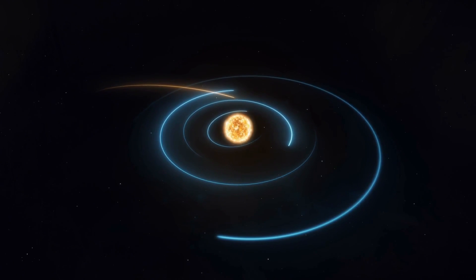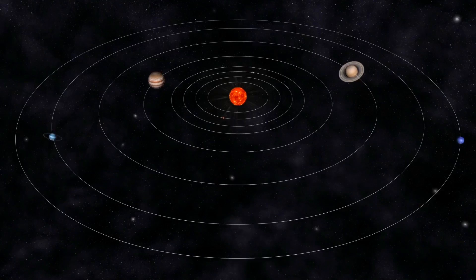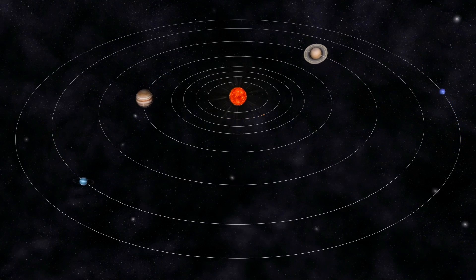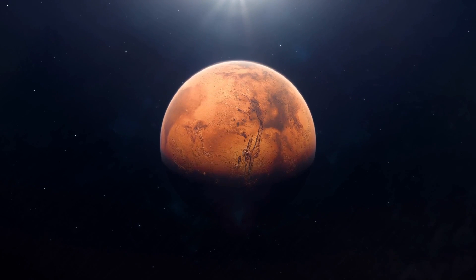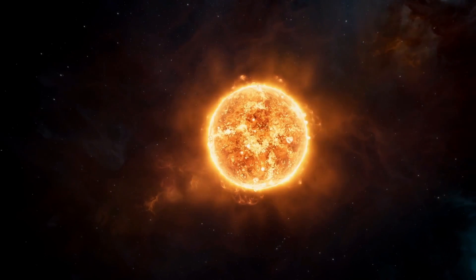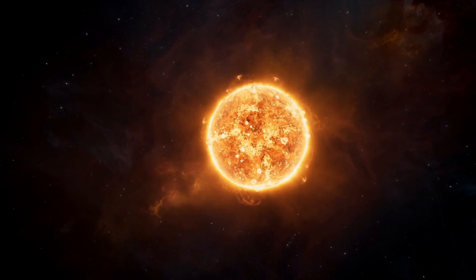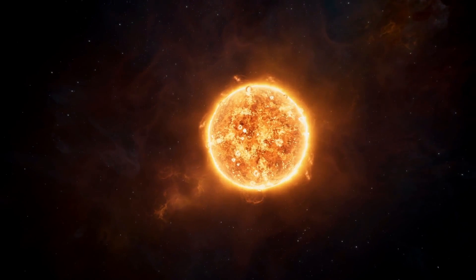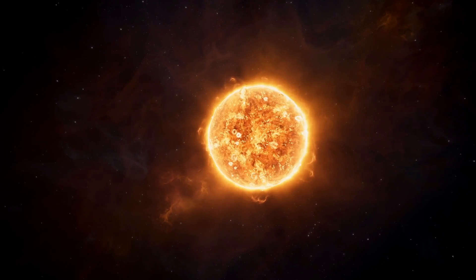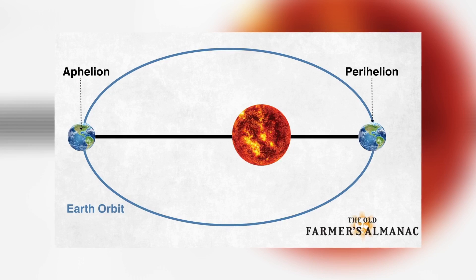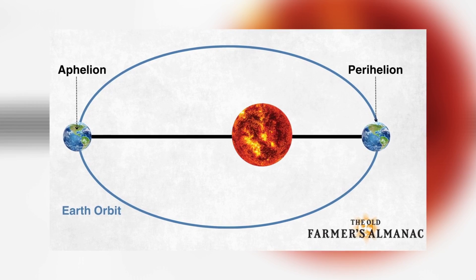An interstellar object known as 3i Atlas is now speeding through the inner regions of our solar system, having already crossed the orbit of Mars and moving rapidly toward its closest pass by the Sun. At this very moment, it is racing toward what astronomers call its perihelion, the point in its orbit where it will be nearest to our star.